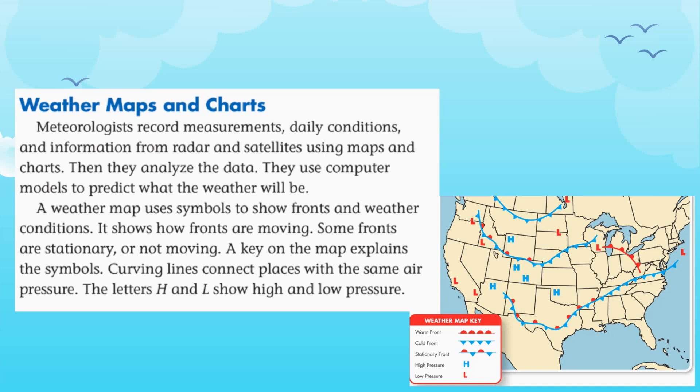Meteorologists record daily measurements and information from radar and satellites using maps and charts, then analyze the data and use computer models to predict what the weather will be. A weather map uses symbols to show fronts and weather conditions, indicating how fronts are moving — some fronts are stationary, or not moving. A key on the map explains the symbols, and curving lines connect places with the same air pressure. The letters H and L show high and low pressure areas.